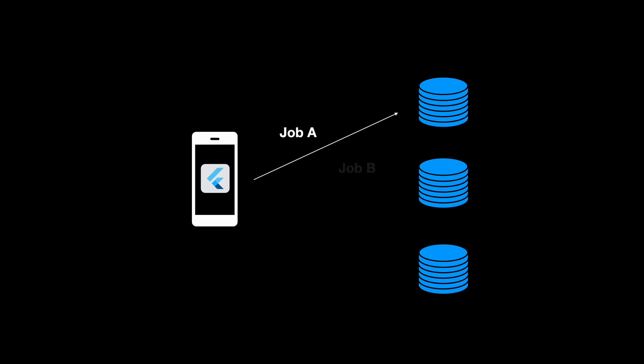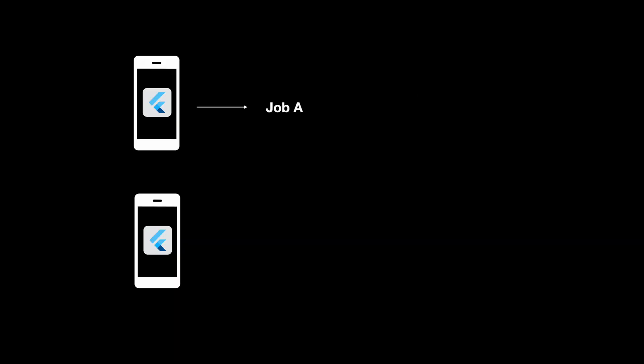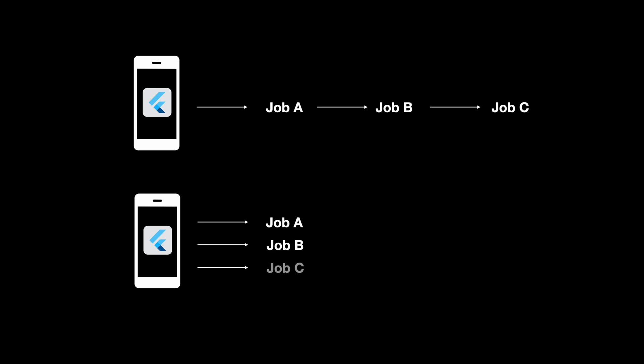Have you ever needed to call multiple APIs or load different pieces of data at once in your Flutter app, instead of waiting for each one sequentially? What if you could run them all together and save valuable time? In this video, I will show you how to use Future.wait in Flutter to run multiple futures in parallel.